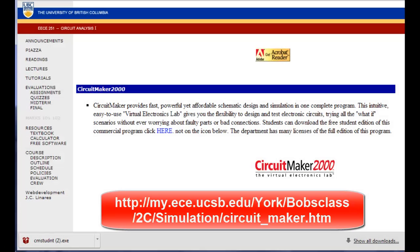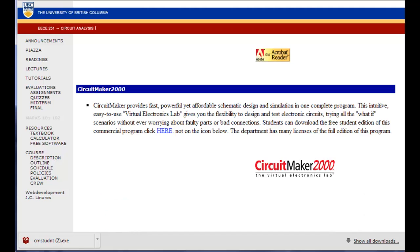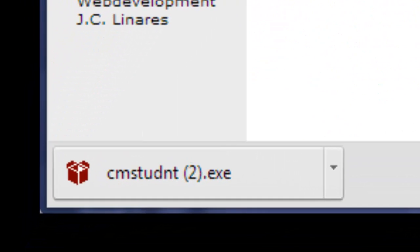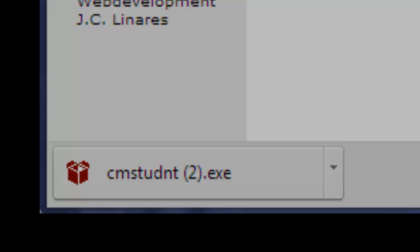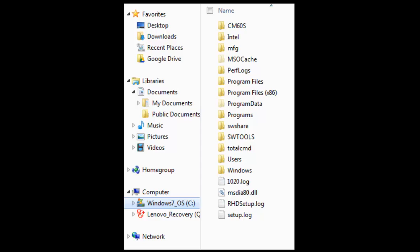I am using Chrome, so the downloaded file shows up here at the bottom of the screen. Now, I click on it to run it and the installation process begins. It is very straightforward. By default, it will install the CircuitMaker in its own subdirectory below the root of drive C. You may change that at your own convenience.